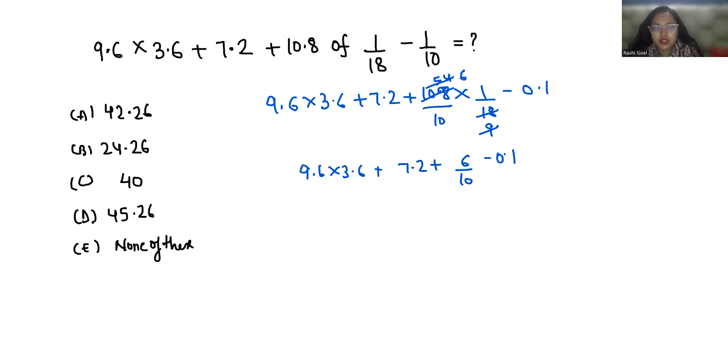So 9.6 times 3.6 plus 7.2 plus this 6 by 10 is 0.6 minus 0.1. Now first we multiply 9.6 with 3.6. So we get 34.56 plus 7.2 plus 0.6 minus 0.1.